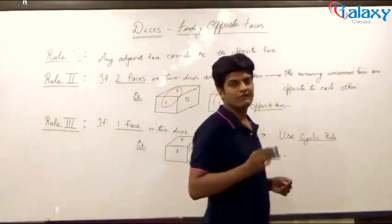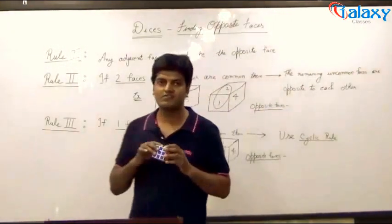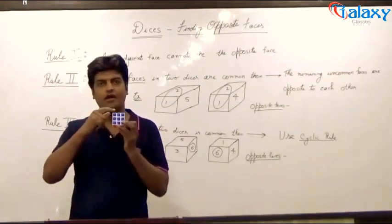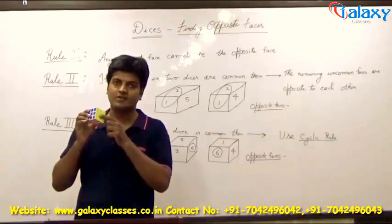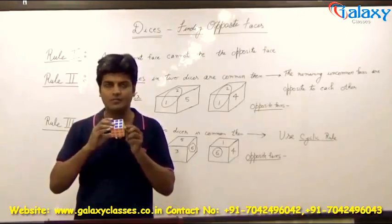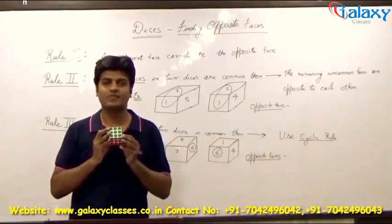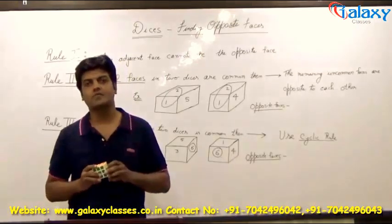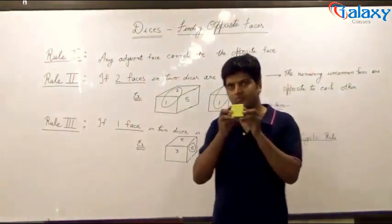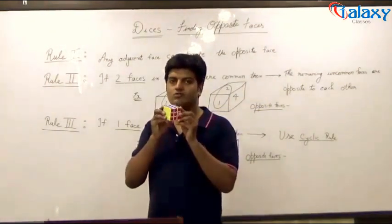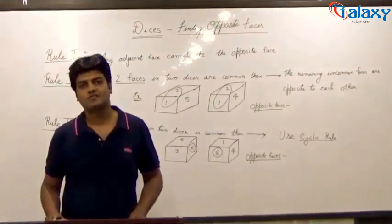A dice is basically a cube having six faces. Every face of a dice has one face opposite to it and four adjacent faces. Say, in this dice the yellow face has red, blue, orange and green as its adjacent faces and white as its opposite face. Also, from any given vantage point, you can either see one face of the dice, two, or three. In most of the questions that you will encounter, you will be given three faces of a dice.